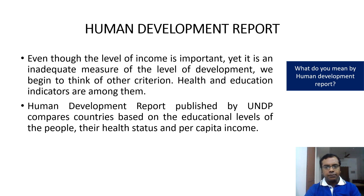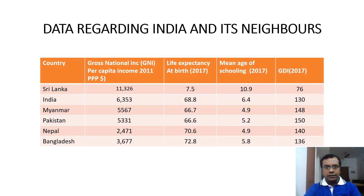As per the report published by UNDP, it compares various countries based on the educational levels of the people, their health status, and per capita income. We can see a comparison of India with its neighbors like Sri Lanka, Myanmar, Pakistan, Nepal, and Bangladesh. The Gross National Income (GNI) as of 2011 for India is 6,353, compared to Sri Lanka which is as high as 11,326.